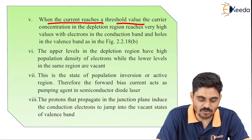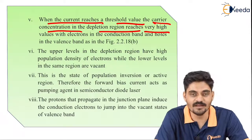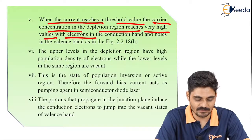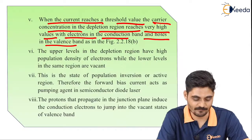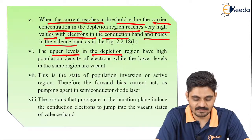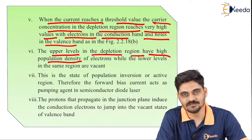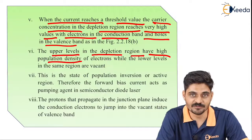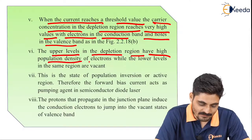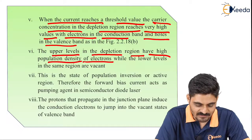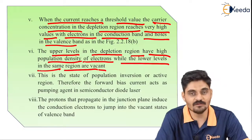When the current reaches a threshold value, the carrier concentration in the depletion region reaches very high values, with electrons in the conduction band and holes in the valence band. The upper levels in the depletion region have high population density, while the lower levels in the same region are vacant.